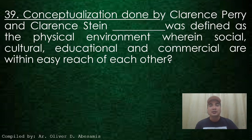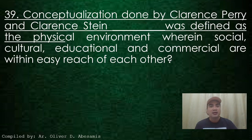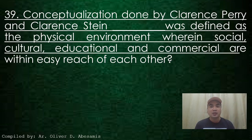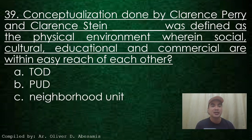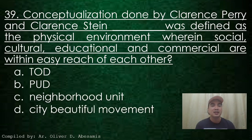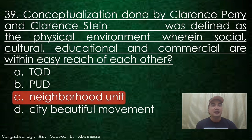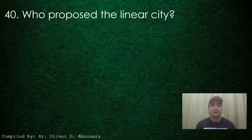Next. Conceptualization done by Clarence Perry and Clarence Stein. Blank was defined as the physical environment wherein social, cultural, educational, and commercial are within easy reach of each other. A. TOD, B. PUD, C. Neighborhood Unit, D. City Beautiful Movement. Answer: C. Neighborhood Unit.